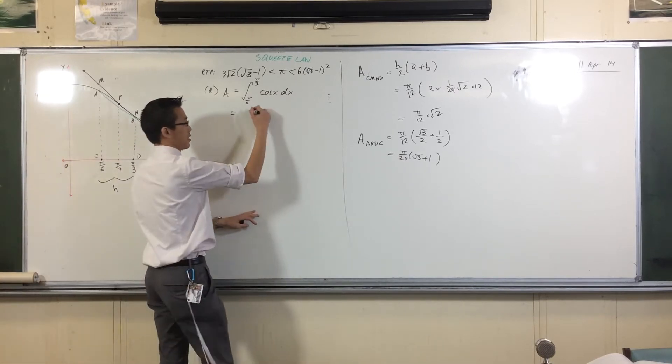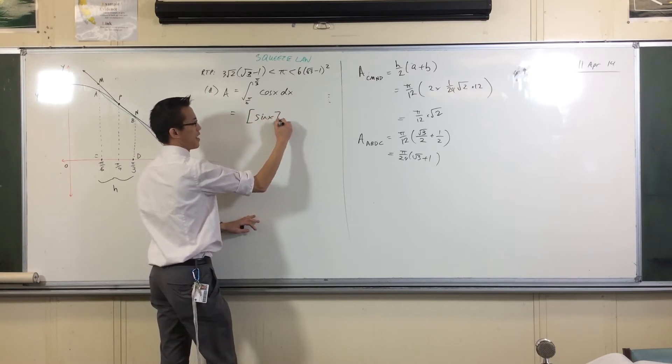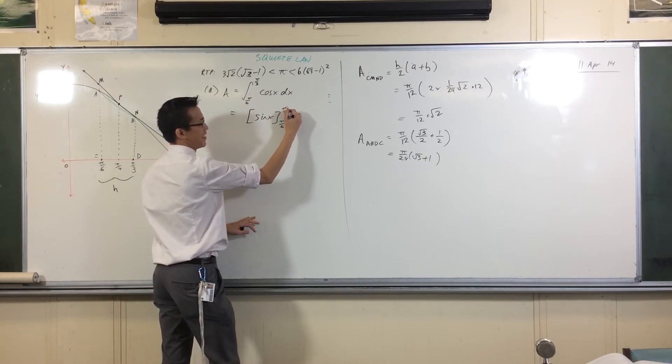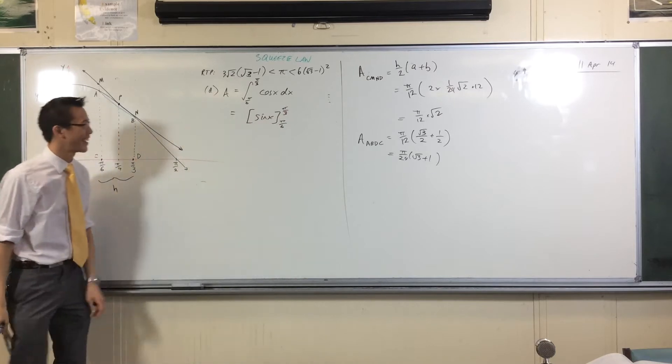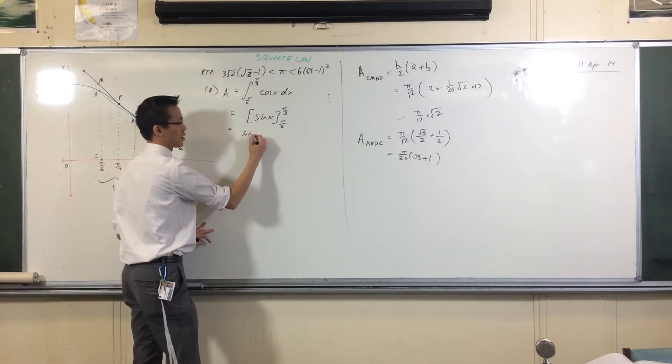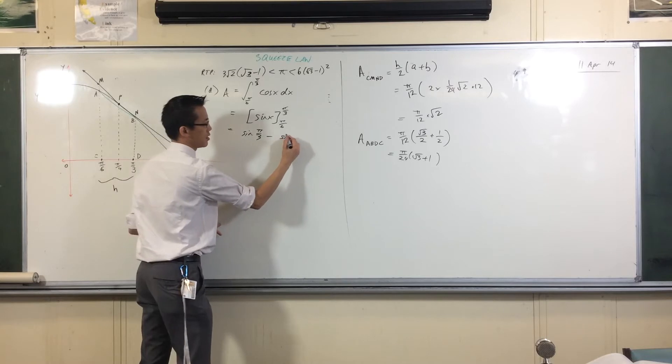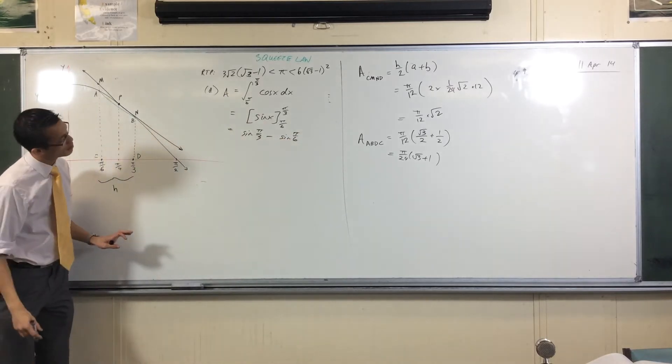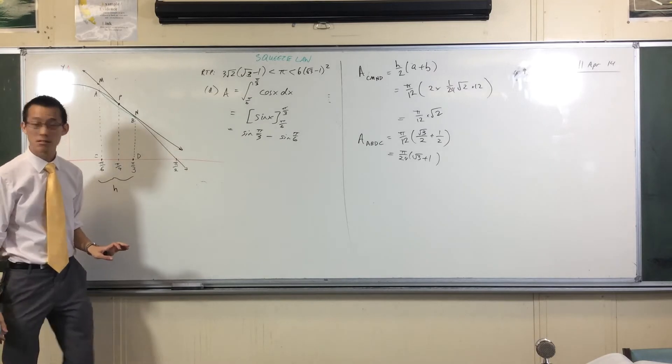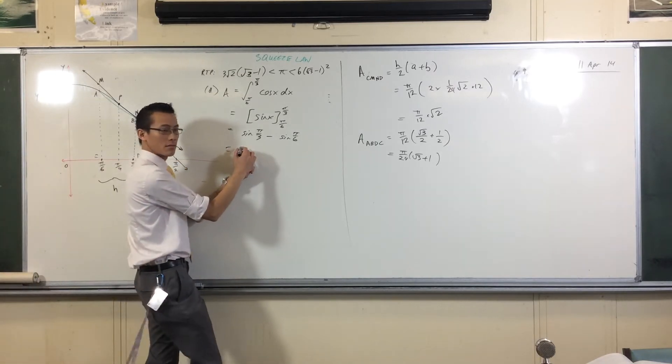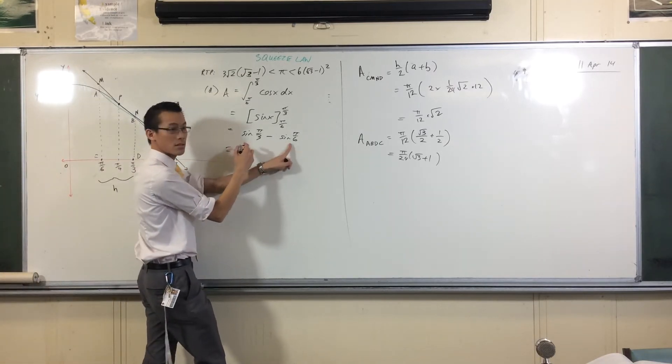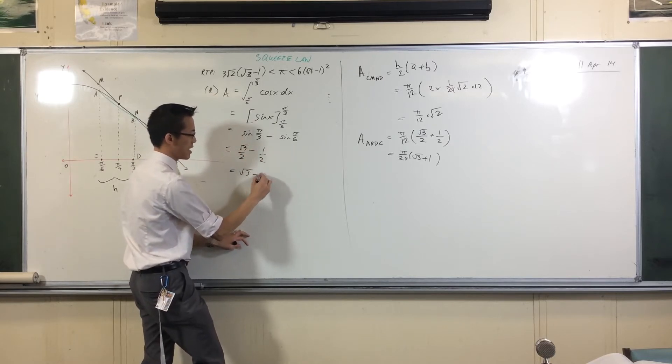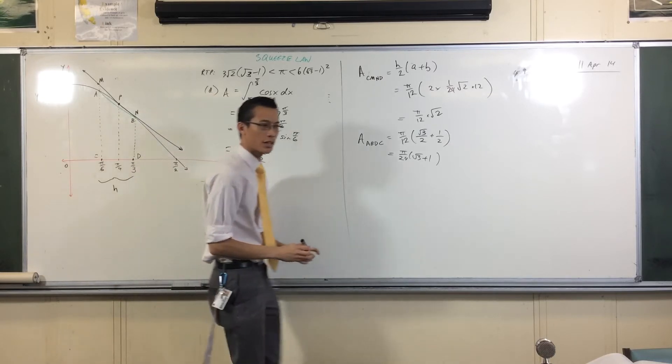What is it? Cos goes into sine, doesn't it? Not negative sine, be careful, we're integrating, not differentiating. So therefore, definite integral, sine π/3 minus sine π/6. What's this? √3/2, what's this? A half. So now, have a look at that. Have a think.